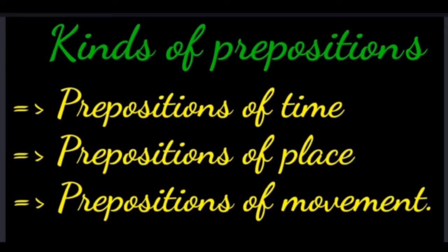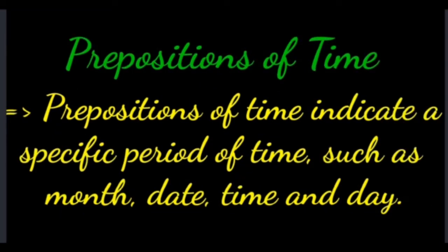Now, kinds of prepositions. Prepositions of time, prepositions of place, and prepositions of movement are the three main kinds. Moving to the first type — prepositions of time. Prepositions of time indicate a specific period of time, such as month, date, time, and day.